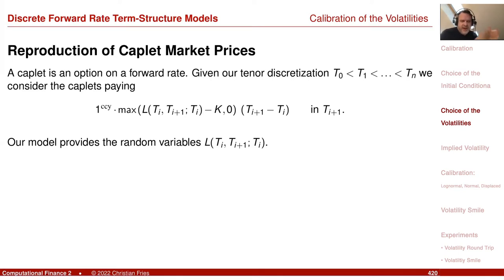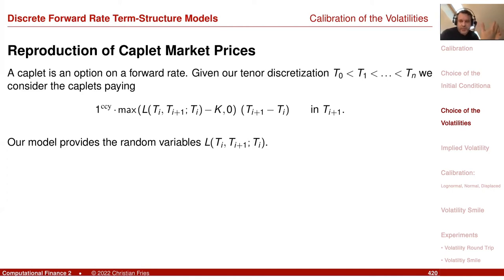Note also there are other products like swaptions that also have this dependency, and we could look at those as well. Let's start with how we choose parameters such that the model reproduces an observed caplet market price.